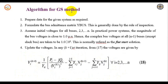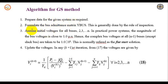The algorithm of the Gauss-Seidel method applicable to PQ buses is as follows. For the given power system, first prepare the data, then formulate the bus admittance matrix Y-bus by the inspection method. Next, assume the initial voltages for all PQ buses as 1.0 per unit at angle 0 degrees. This assumption of voltage magnitude 1 at angle 0 is called the flat start solution in power systems.